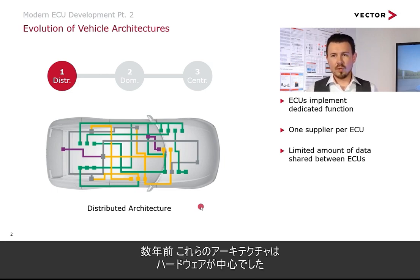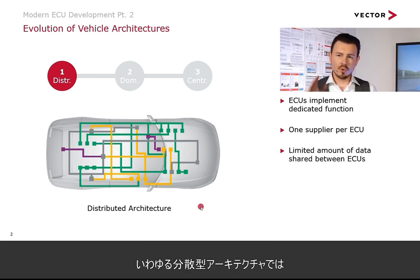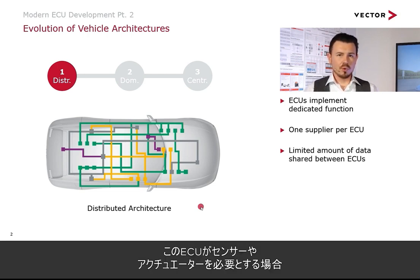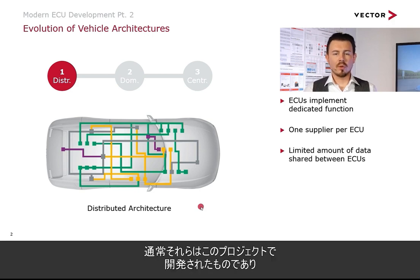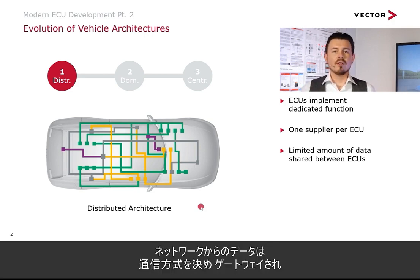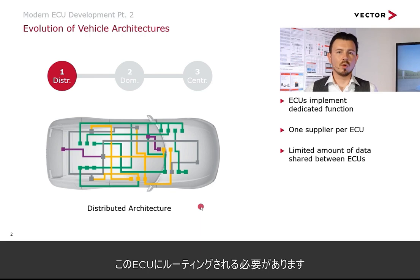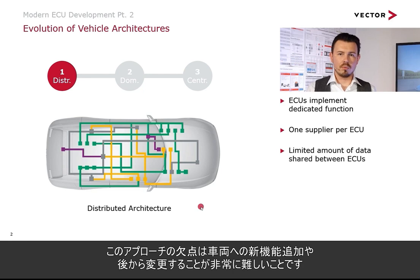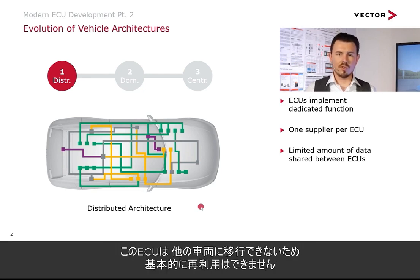A couple of years ago, these architectures were very hardware-oriented. In these so-called distributed architectures, basically every function was represented by its own box, developed by its own manufacturer. If an ECU needed sensors and actuators, they were typically developed for that project, and data from the network had to be routed to the ECU by adapting the communication matrices and gateways. The drawbacks are clear: it's very difficult to add new functions to the vehicle or modify them later, and there was basically no reuse because you cannot transfer this ECU to another vehicle.